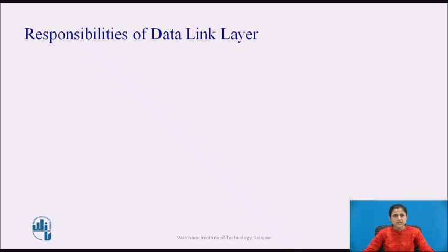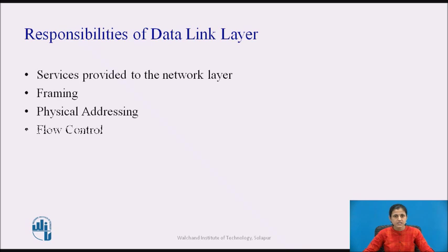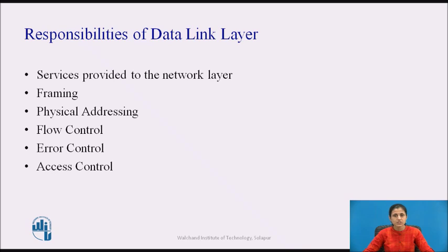The data link layer has a number of specific functions which include providing a well-defined service interface to the network layer, framing, physical addressing, flow control, error control, and access control. The first function is providing a well-defined service interface to the network layer, which we will see in detail in this video.